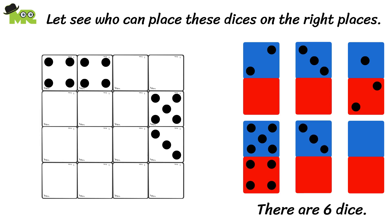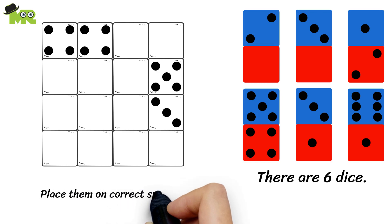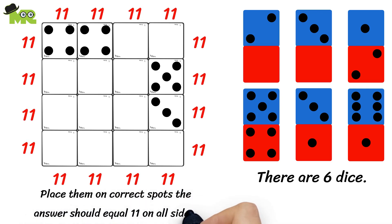For the fifth dice we have three and one, for the sixth dice we have six and one. If you place them on correct spots the answer should equal 11 on all sides. But remember, every square